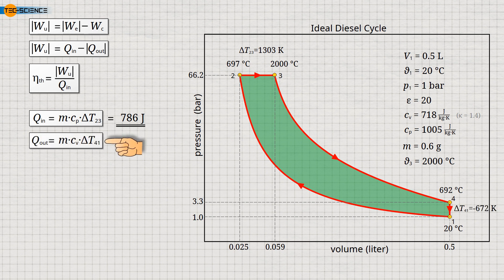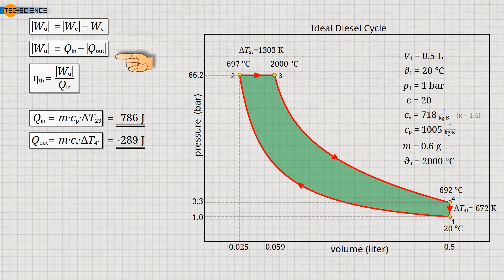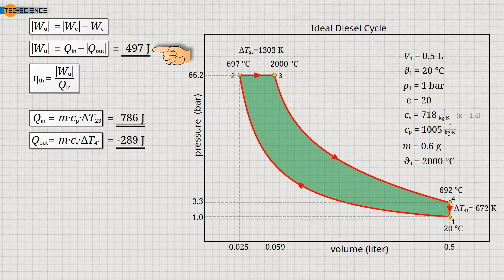In the same way, the heat rejected during isochoric cooling from state 4 to state 1 can be determined from a temperature change of minus 672 kelvin. Because of the isochoric process, the specific heat capacity CV must be used. In this case, the resulting heat energy is minus 289 joules. The negative sign simply indicates that heat has been removed from the gas due to the temperature decrease. As explained earlier, the difference between the heat supplied and the heat removed is the useful work. This results in a useful work of 497 joules that the engine cylinder delivers to the crankshaft during one thermodynamic cycle.